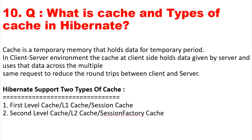The next question is: what is cache and what are the types of cache in Hibernate? Cache is a temporary memory that holds data for a temporary period in a client-server environment. The cache at the client side holds data given by the server and uses that data across multiple same requests to reduce round trips between client and server. For example, if we are getting a record from the database with the same ID, the first time it will get the record from the database, but the next time it will get the data from cache.